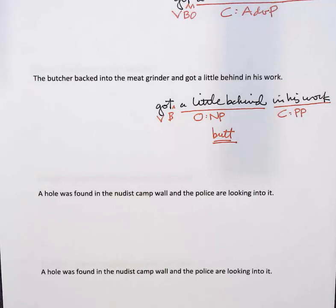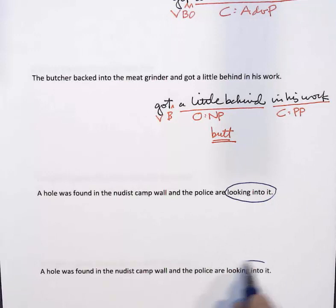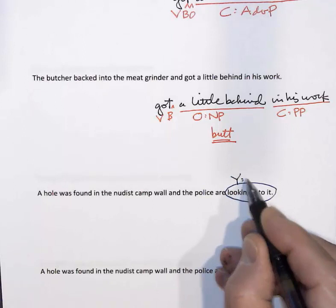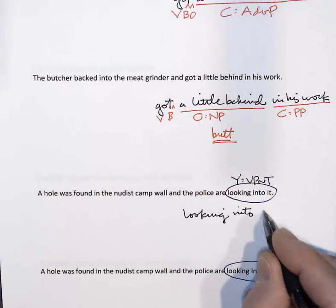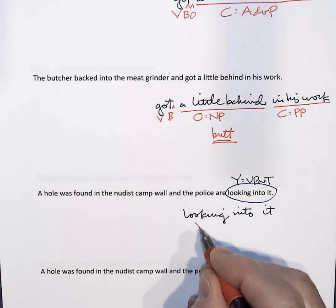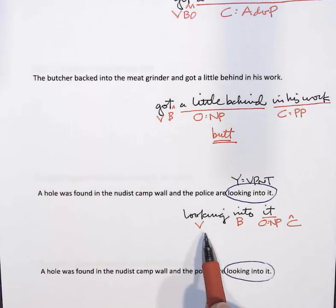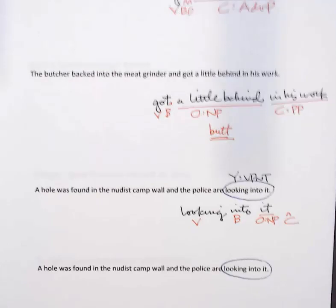'A hole was found in the nudist camp wall and the police are looking into it.' All the ambiguity is at the end, in the Y. First analysis: 'looking' is the verb, 'into' is the particle, 'it' is the object — a noun phrase — and the complement place is empty. Here, 'looking into' as a verb-particle expression means investigating — the police are investigating the hole.